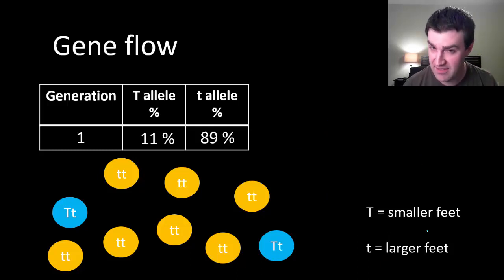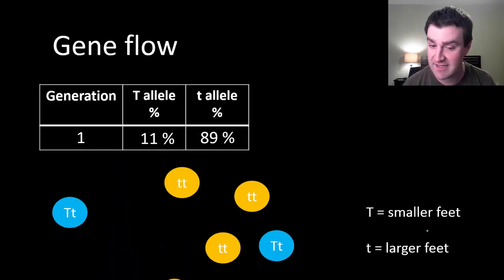Another way that the gene pool could change would be if a bunch of the individuals with larger feet left, like for example here. Then these individuals are left to reproduce with one another. Maybe again that causes a shift in the gene pool over generations.